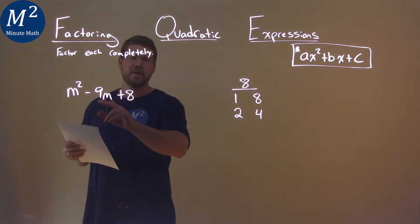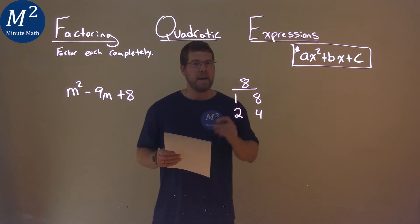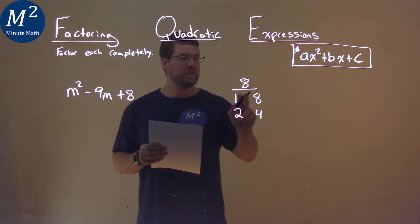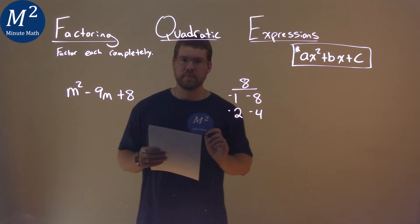But they also tell us that our b value is negative, meaning that both of these numbers will have to be negative.